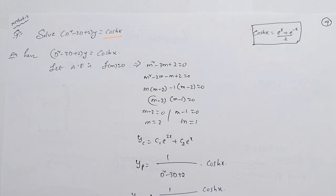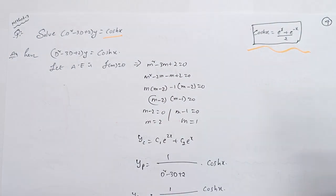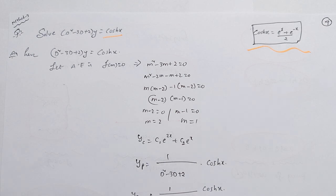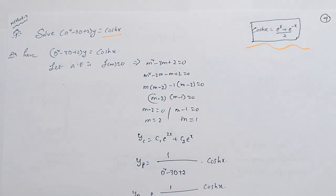But cosh(x) is the formula: e^x plus e^(-x) divided by 2. This is the formula — this formula is the key. This method is related to the second method. Some Method 3 connects to Method 2. But the answer is fine.